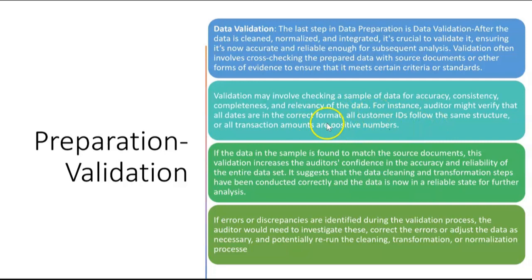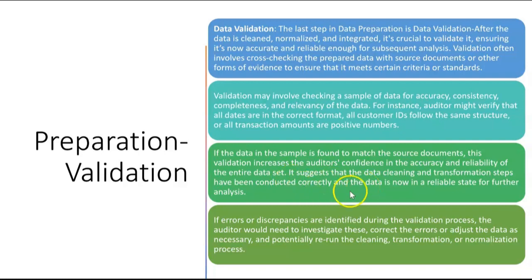For instance, the auditor might verify that all dates are in the correct format, all customer IDs follow the same structure, or all transaction amounts are positive numbers. If the data in the sample matches the source documents, we have validation, which increases the auditor's confidence in the accuracy and reliability of the entire data set. If errors or discrepancies are identified during validation, the auditor would need to investigate, correct the errors, and potentially rerun the cleaning, transformation, or normalization process. If we have validation, we can leave the preparation stage and move on to the analysis stage.